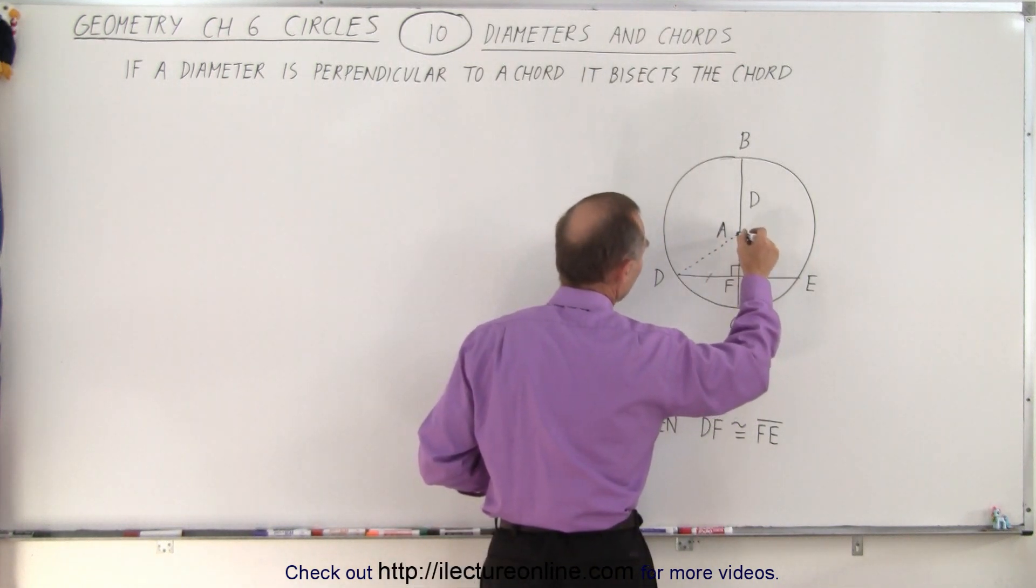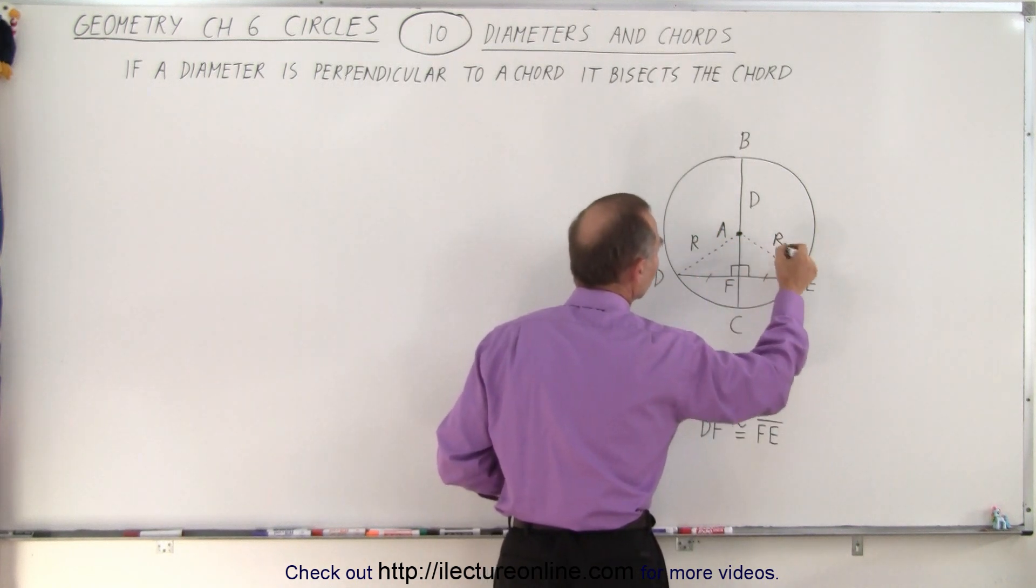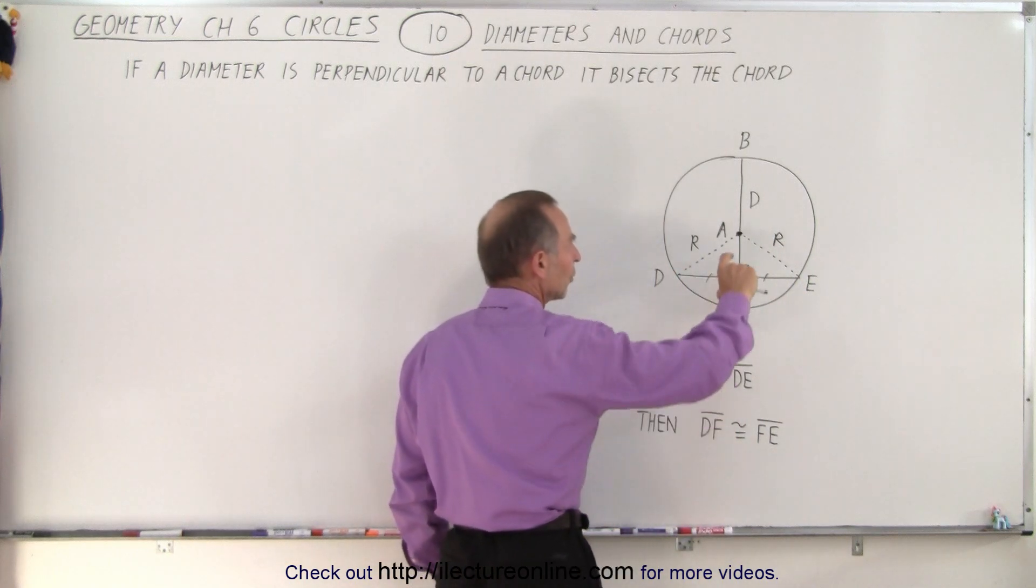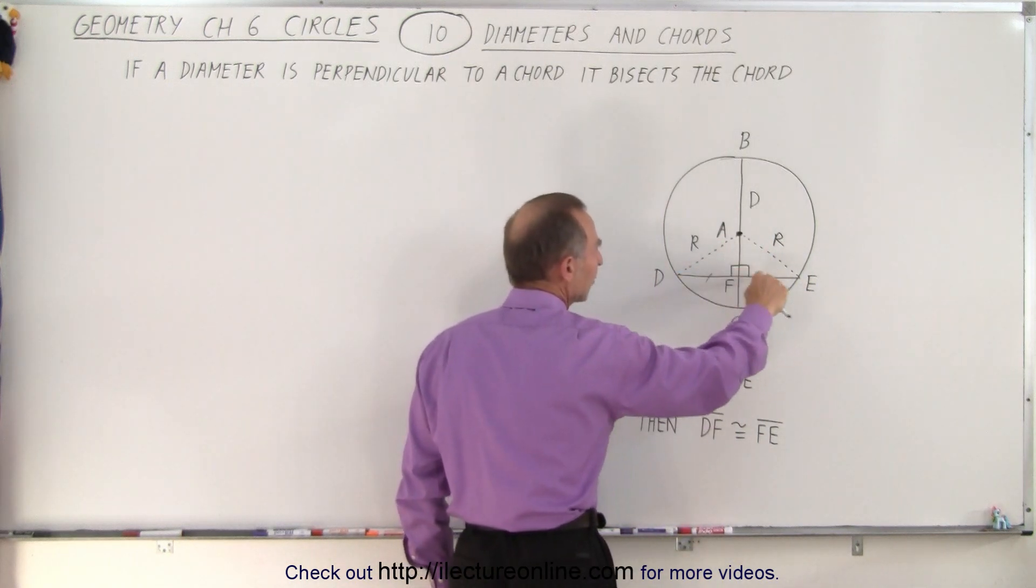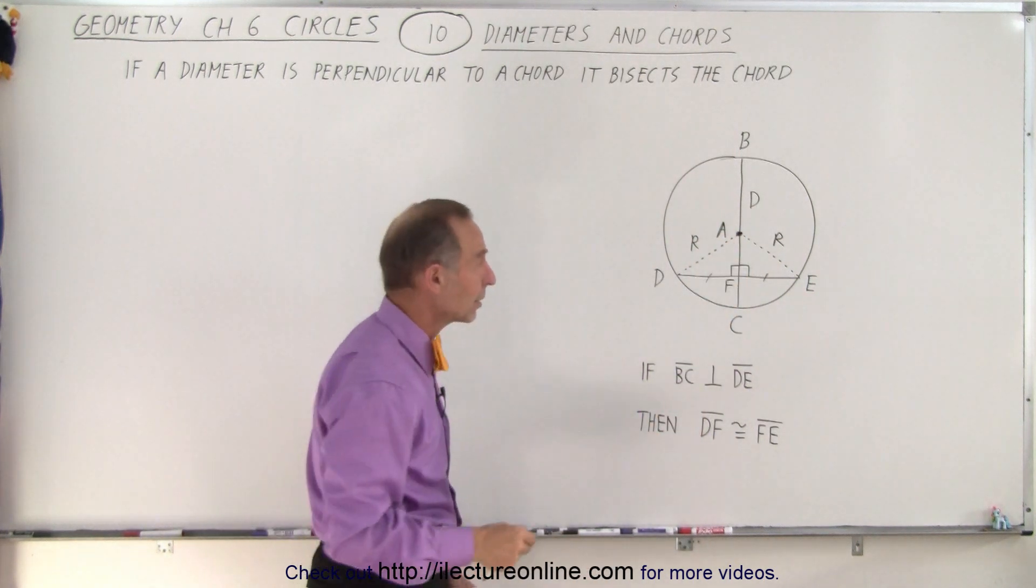and we draw a line from A to E, these represent the radius of the circle. So notice that the two triangles that we have now created both have a hypotenuse which must be equal in length because they're equal to the radius.